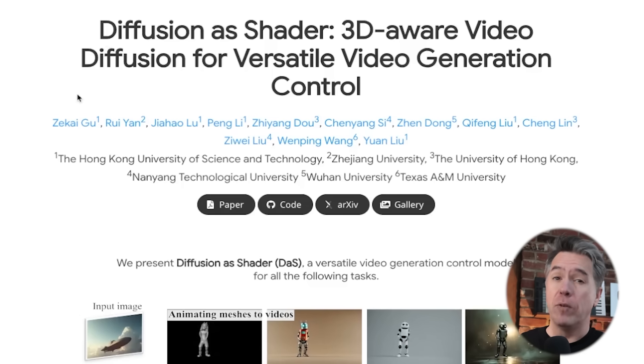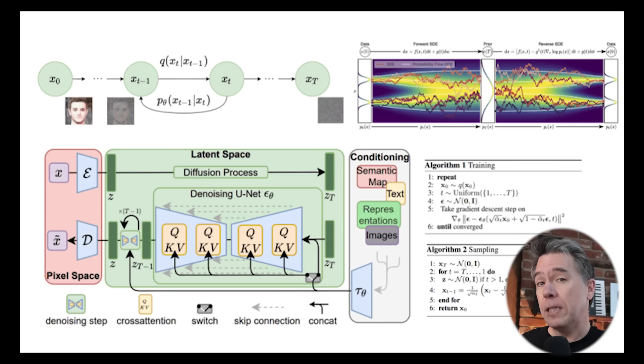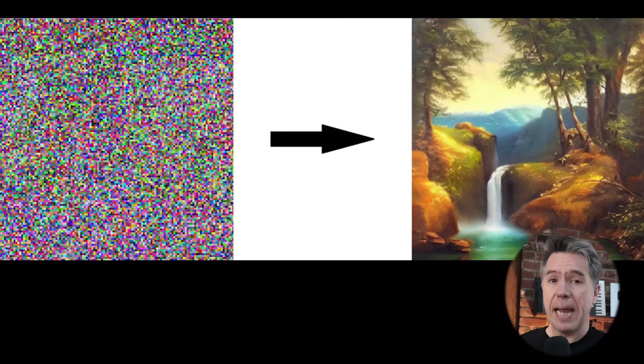First up we have DAS, or Diffusion as Shader — 3D Aware Video Diffusion. This is a pretty big deal, but I think in order to understand why, it might be a good idea to explain and define a few of the concepts here. I'll keep it on the simple side. Broadly speaking, AI images and video are generated via a method called diffusion. It begins with a random spattering of static and then generates an image or video based off of whatever you text prompted it.